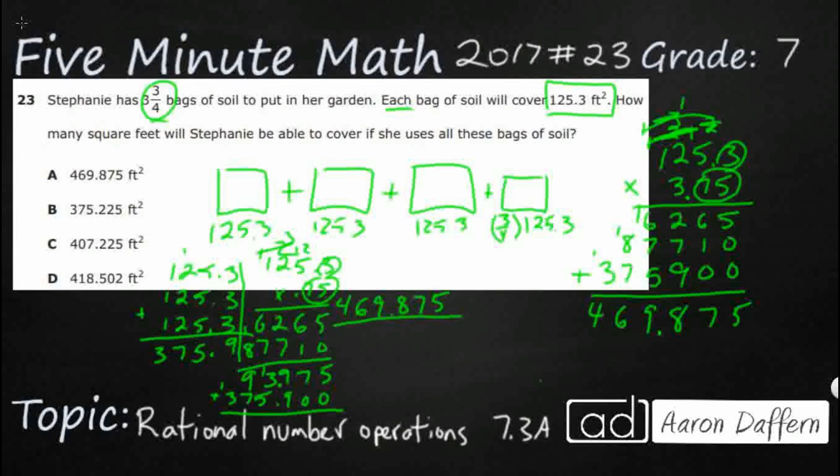So either way, we do it the long way with my picture or just straight up multiplication. You see, the biggest key we had to do here was to turn this 3 and 3 quarters into 3.75. So our answer here is going to be A.